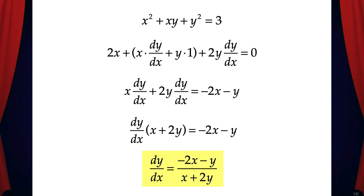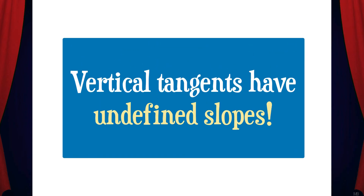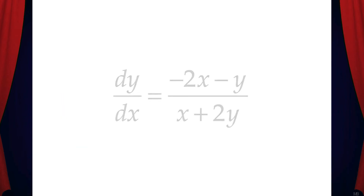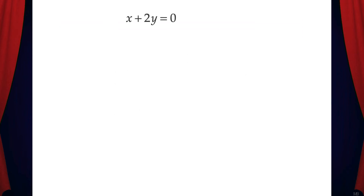Then we can factor out dy/dx and divide, and we get dy/dx equals negative 2x minus y divided by x plus 2y. Now remember, the problem states find all points on the curve where the tangent lines are vertical. Vertical tangents have undefined slopes, so we're going to determine where dy/dx is undefined — that will occur where the denominator equals 0. So let's set x plus 2y equal to 0 and solve. We could solve for x or for y — in this case I'll decide to solve for y.